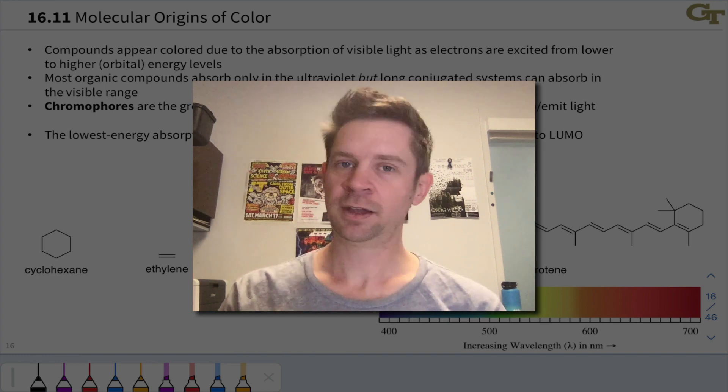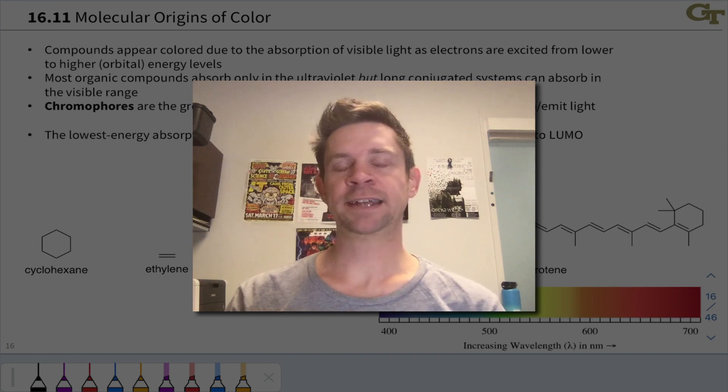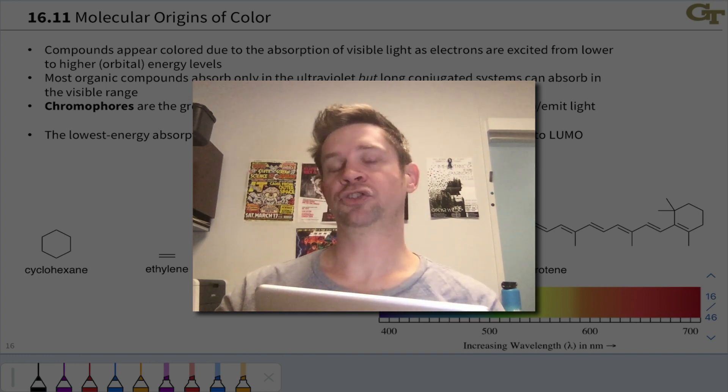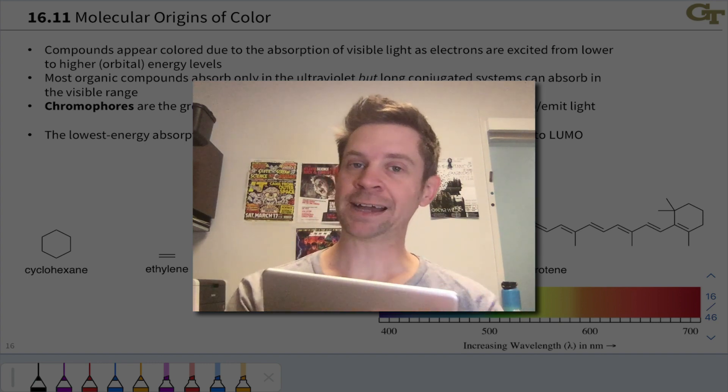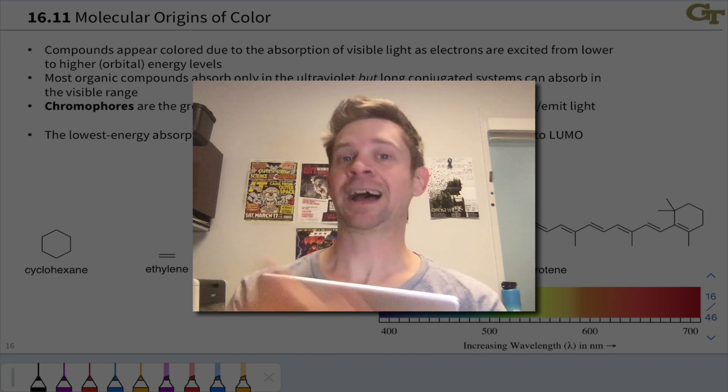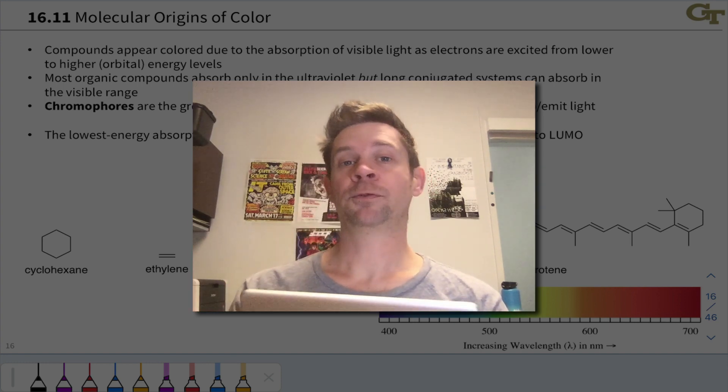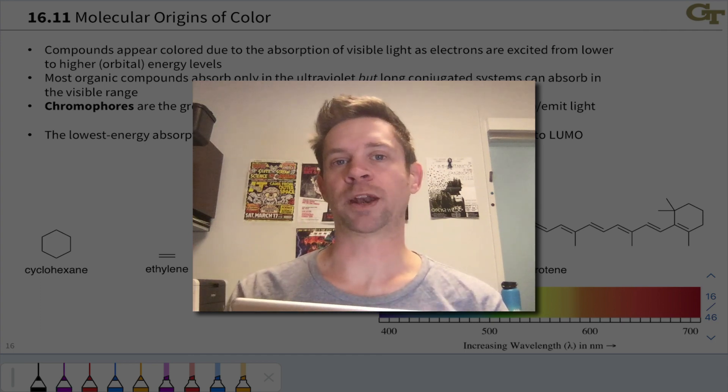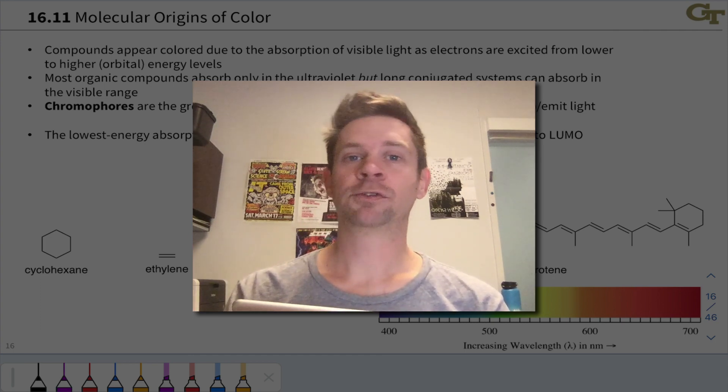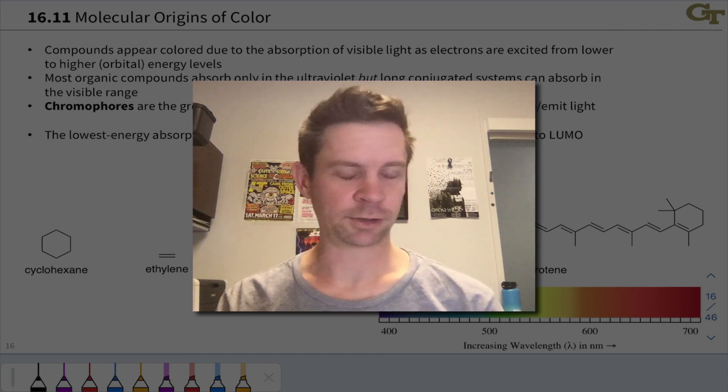We're going to look at some foundations of the molecular origins of color and see how, as we lengthen conjugated systems, they go from absorbing light primarily in the ultraviolet range of the spectrum, which is relatively high energy, to the visible range, which is a little bit lower in energy for electronic transitions, when an electron is excited from a lower energy orbital to a higher energy orbital.